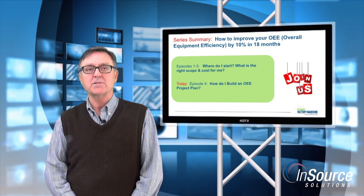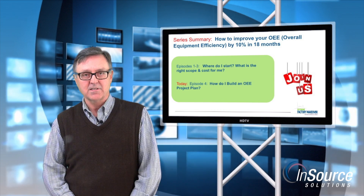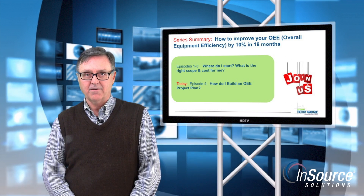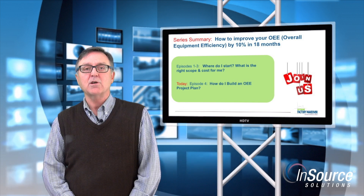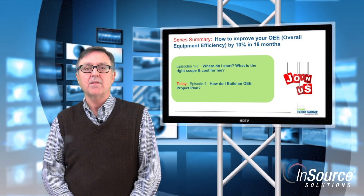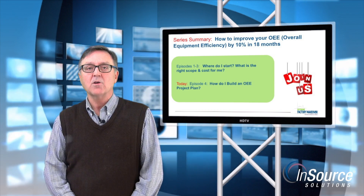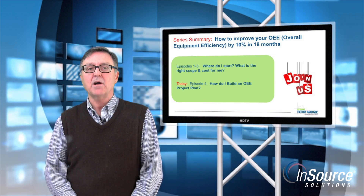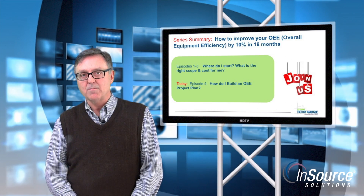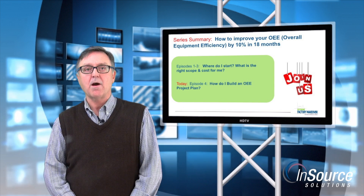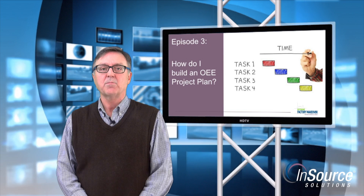In Episode 1, we addressed planning at a strategic level. I'm starting the conversation today assuming that we have a good high-level strategy that has identified an OEE solution that brings value to the business. In Episodes 2 and 3, we translated the strategic OEE solution into the project parameters of scope and cost. Today we're addressing the question: how do I build an OEE project plan?